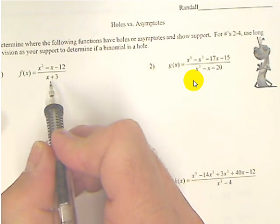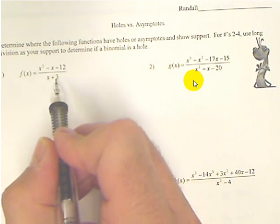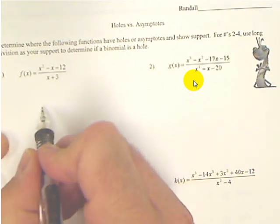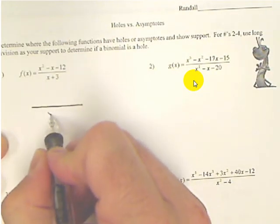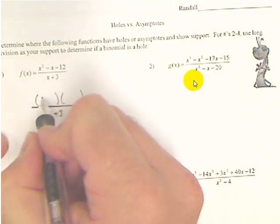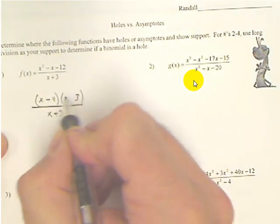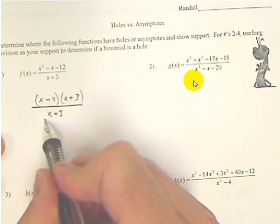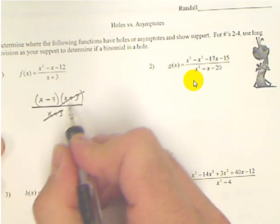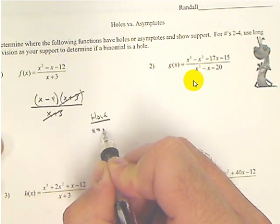Now, holes or asymptotes come from when the denominator is equal to 0. So what makes this denominator 0? Negative 3 does. So negative 3 is either a hole or an asymptote. It's up to us to figure out which one it is. In order to figure out which one it is, we need to see if that x plus 3 cancels. So we factor the top. Minus and plus. And we see that it does cancel. And if it cancels, it creates a hole. So I'm going to put hole at x equals negative 3.